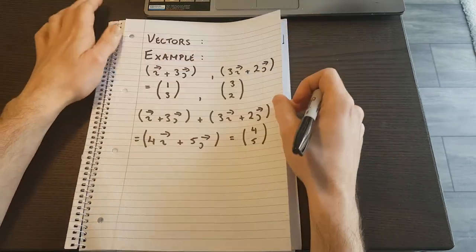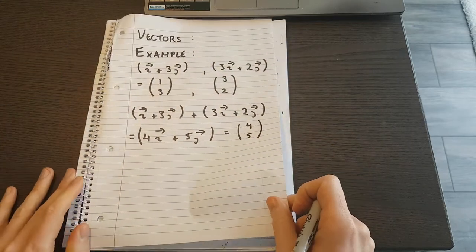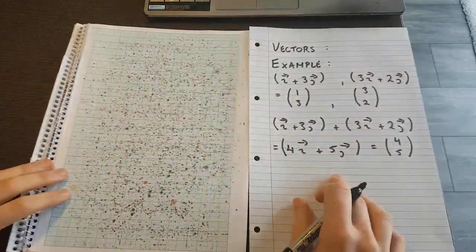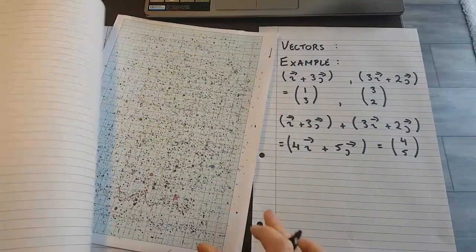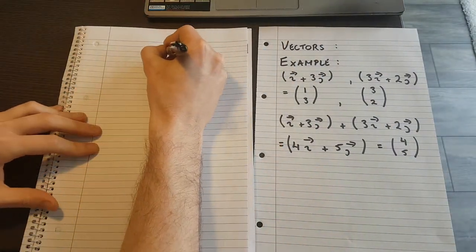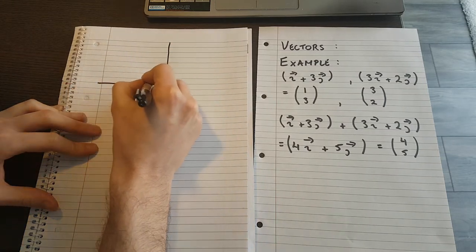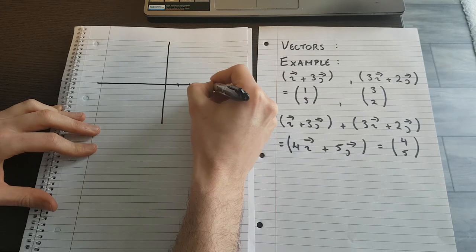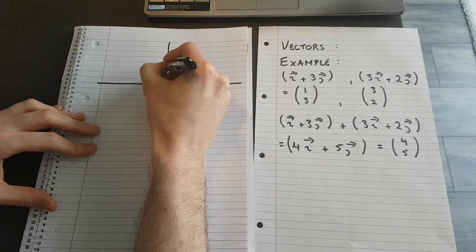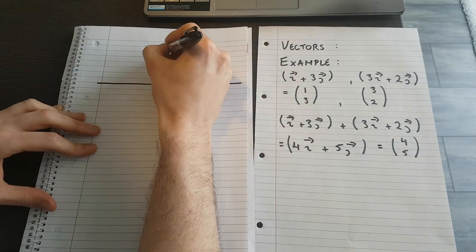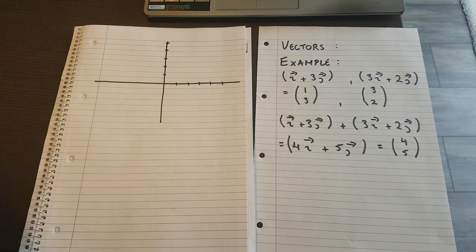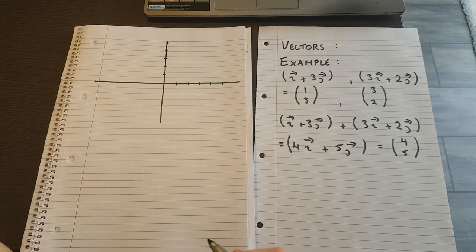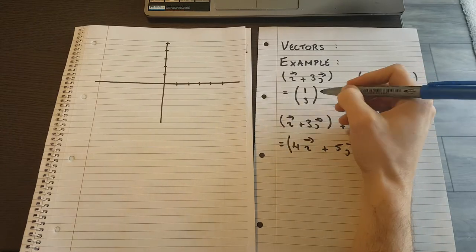And I just want to go back to the graphical representation of that, the picture version of that. So let me draw a little picture here. And we'll go 1, 2, 3, 4, 5. I'm going to draw in, I'll draw this first one here. I'll draw this in blue. So it's 1 in the x direction, and 3 in the y direction.